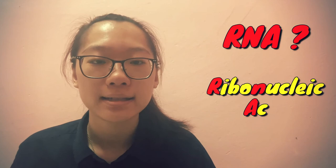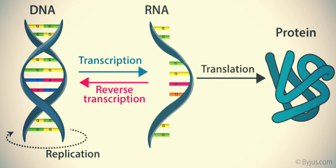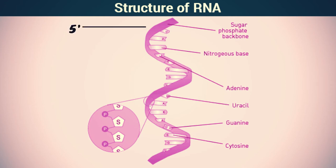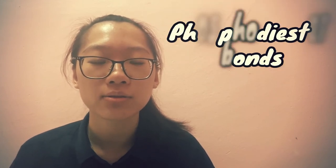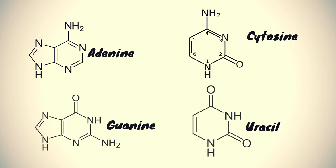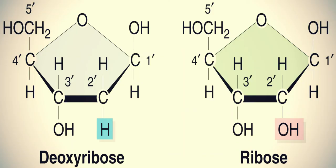RNA, or ribonucleic acid, is one of the three major biological macromolecules essential for life, along with DNA and proteins. It acts as the intermediate between genetic information encoded by DNA and proteins, playing an important role in gene expression. RNA is a single-stranded helix with a 5-prime end with a phosphate group and a 3-prime end with a hydroxyl group. It is composed of ribonucleotides, linked together by 3-prime to 5-prime phosphodiester bonds. The nitrogenous bases of ribonucleotides are adenine, guanine, cytosine, and uracil. A key difference in RNA structure is that ribonucleotides have a hydroxyl group that is absent in DNA.